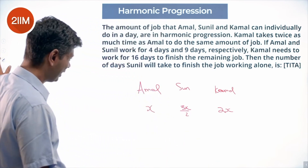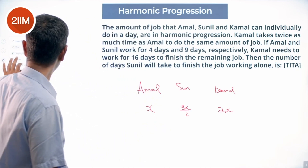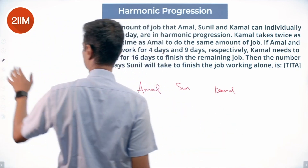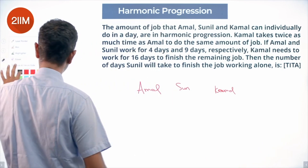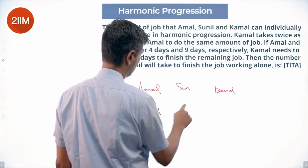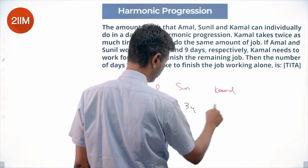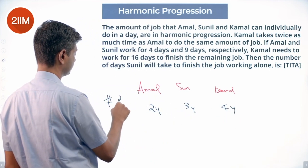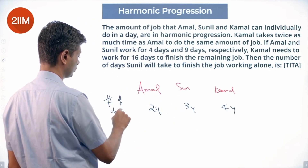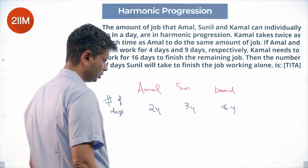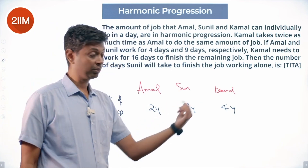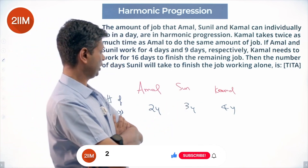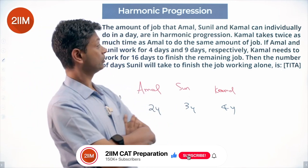Instead of dealing with x, 3x/2, and 2x, let us substitute 2y, 3y, and 4y for the number of days. The amounts of work done per day will then be 1/2y, 1/3y, and 1/4y, which are in harmonic progression. This checks out since 2y times 2 equals 4y.